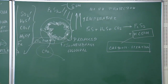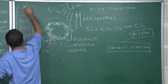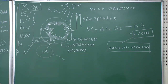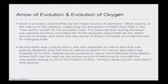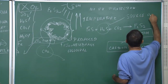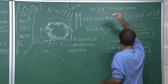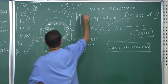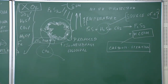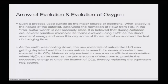What is true and what has happened — nobody can tell with certainty. But this is one of the possibilities. As I am repeatedly telling you, this was a situation where there was absolutely no oxygen. But the arrow of evolution was moving in one direction: such a process uses sulfide as the major source of electrons — it was H₂S which was the major source of electrons. Now the earth was cooling down, temperatures were falling, and the nature of the catalyst catalyzing the formation of FeS₂ from FeS is not precisely clear.